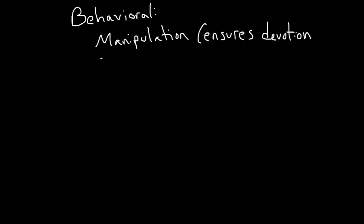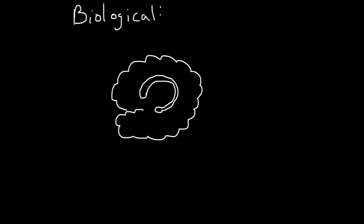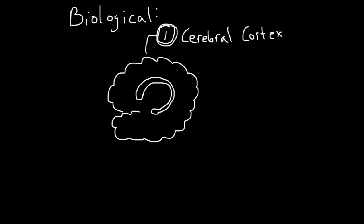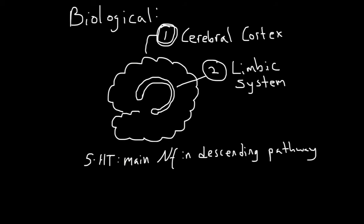Behaviorally, this can be a means of manipulation and gaining advantage in interpersonal relationships, for instance, to ensure devotion of family members or to stabilize a marriage. This is an example of secondary gain. Biologically, we know that the cerebral cortex can inhibit firing of afferent pain fibers, and this mechanism is often impaired in pain disorder. We also know that increased activity of limbic regions occurs in response to painful stimuli. Serotonin is most likely the main neurotransmitter in the descending inhibitory pathways and is implicated in this disorder. Endorphins also play a role in central nervous system modulation of pain. Endorphin deficiency correlates with augmentation of incoming sensory stimuli.